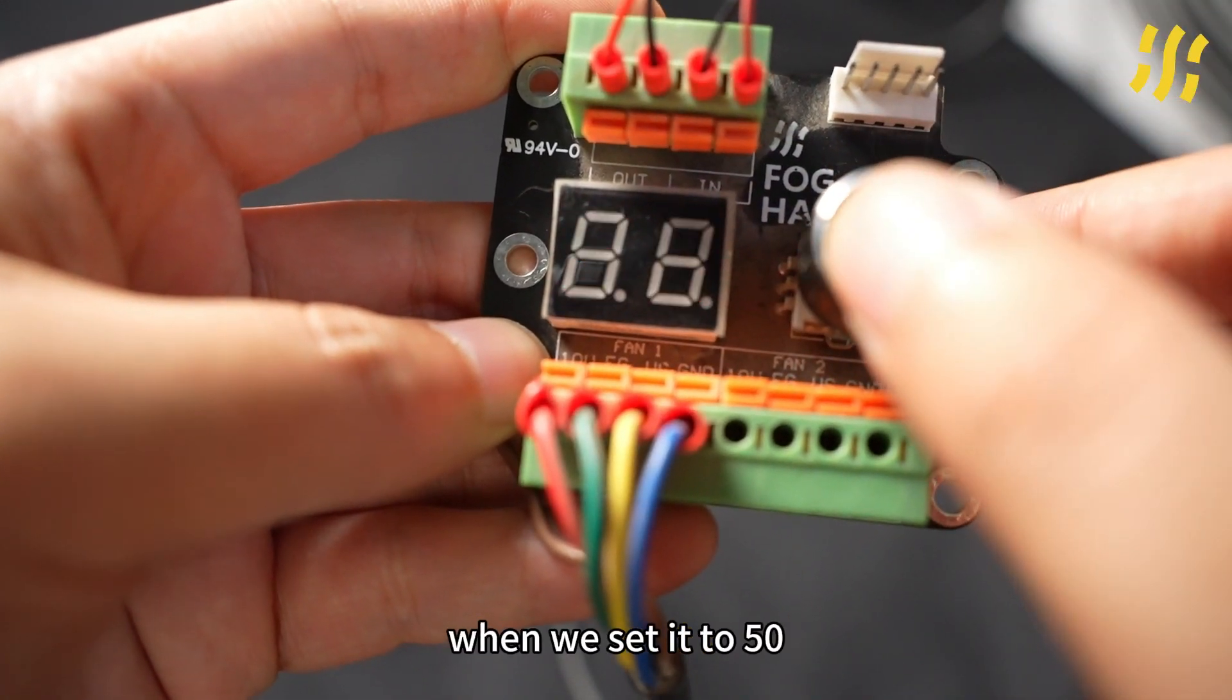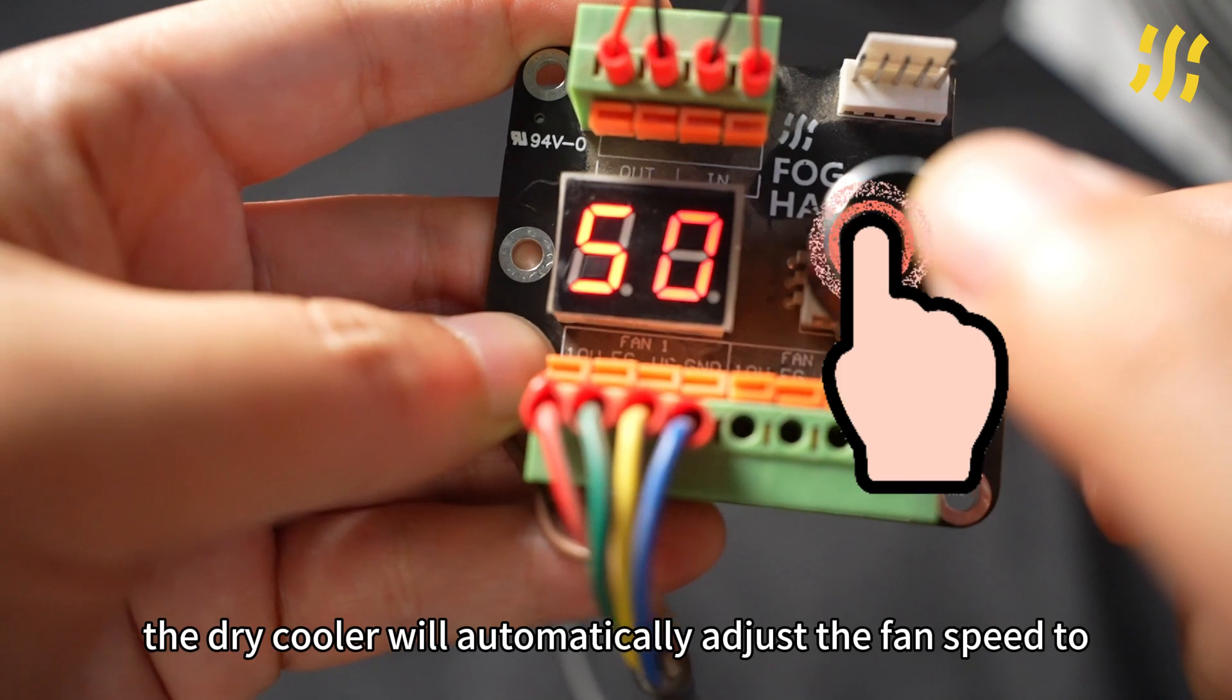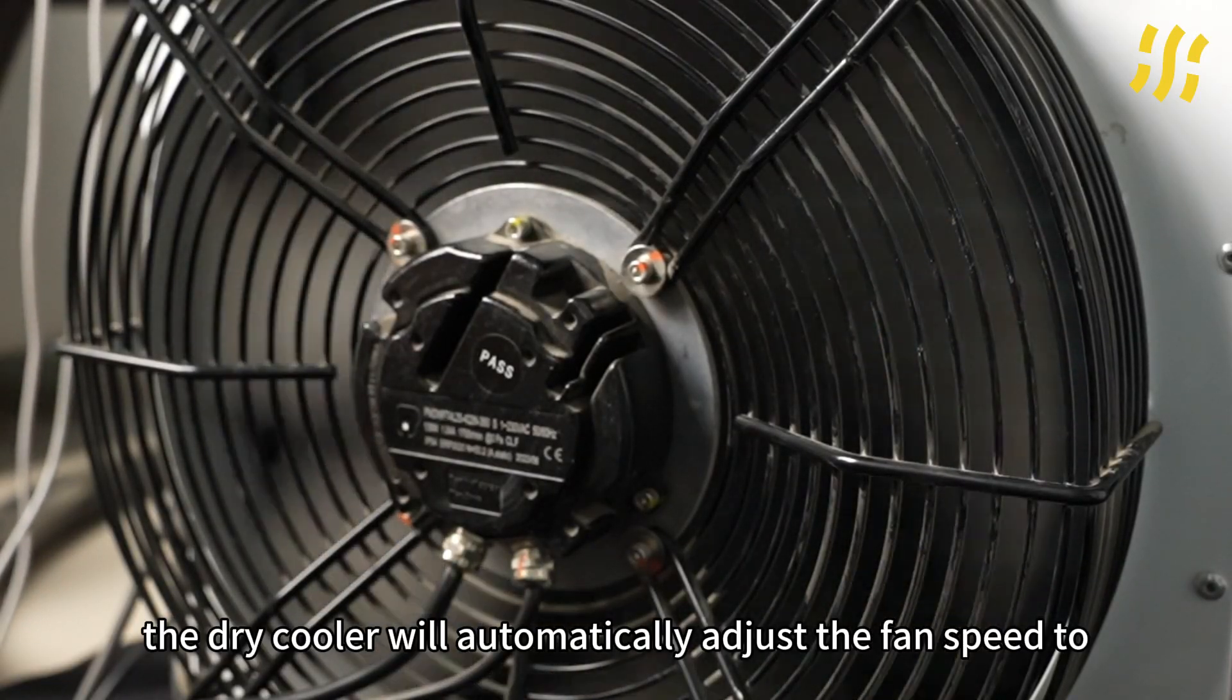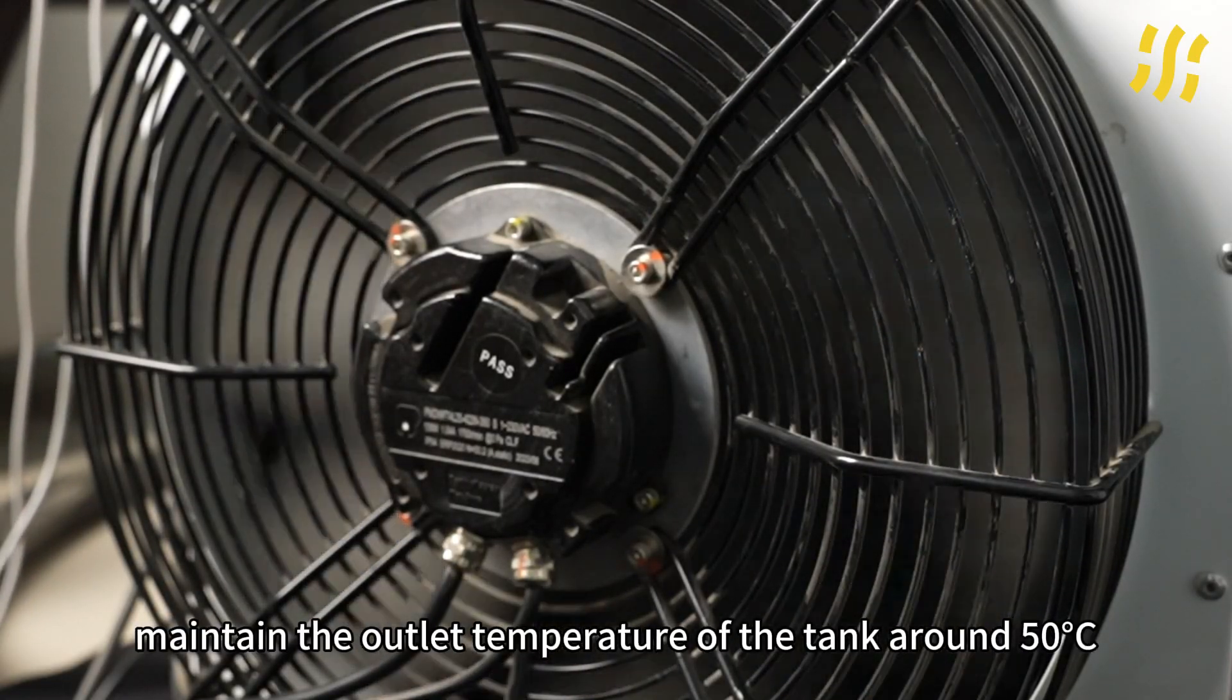For instance, when we set it to 50, the dry cooler will automatically adjust the fan speed to maintain the outlet temperature of the tank around 50 degrees Celsius.